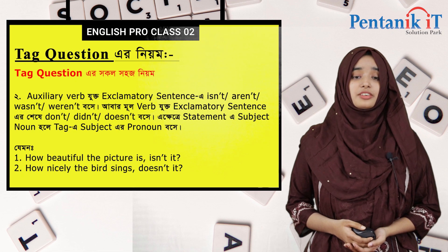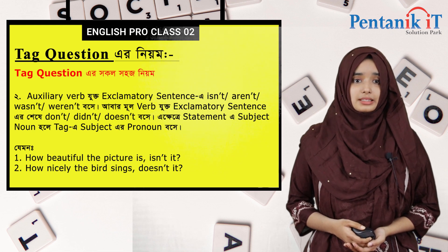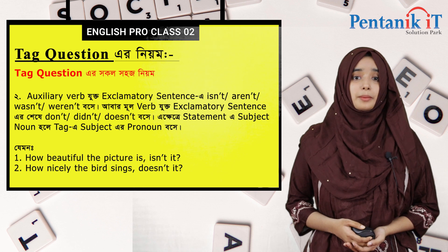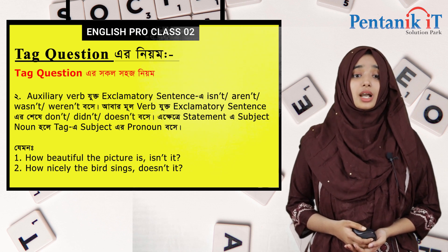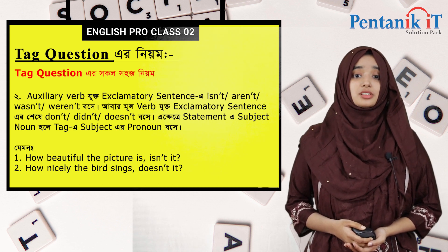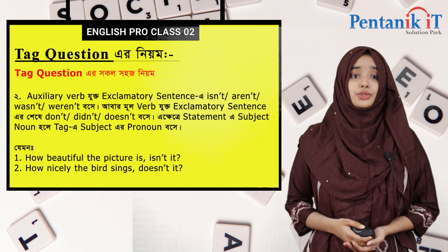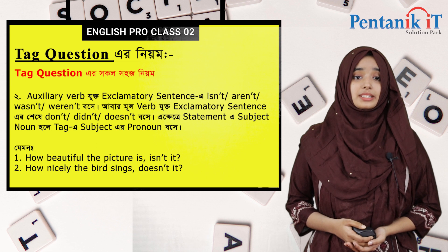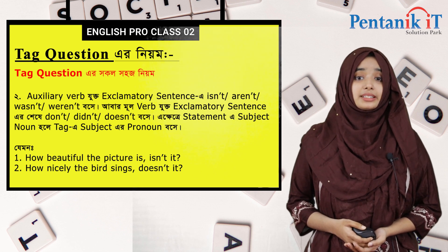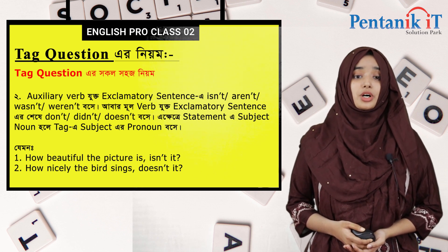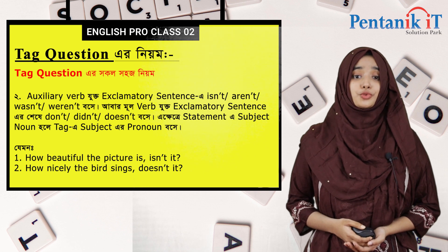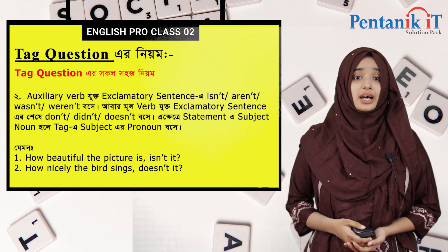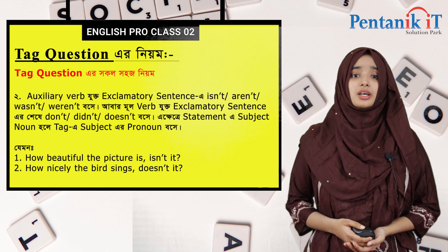Second rule হচ্ছে auxiliary verb যুক্ত exclamatory sentence-এ isn't, aren't, wasn't, weren't ব্যবহার হয়। আর মূল verb যুক্ত exclamatory sentence-এ শেষে don't, didn't, doesn't বসে। Statement-এ subject noun হলে tag-এ subject-এ pronoun বসে। যেমন: 'How beautiful the picture is, isn't it?' 'How nicely the bird sings, doesn't it?'